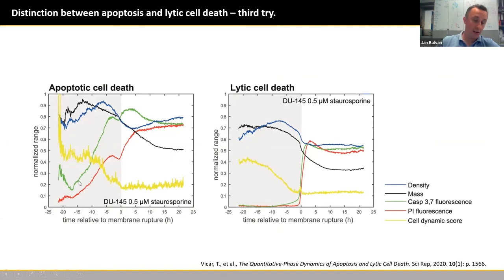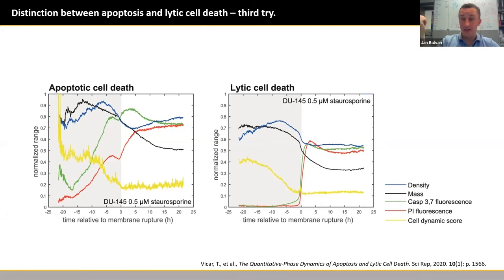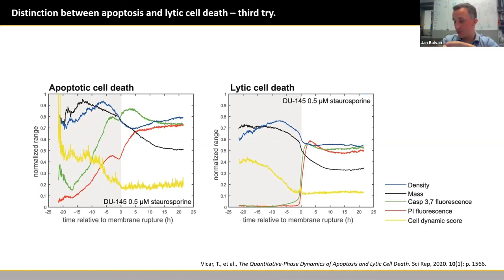You can compare how the curves differ for apoptotic and lytic cell death. Note the delay between the onset of the green fluorescent signal and the red fluorescent signal, typical for apoptosis — the cell first becomes positive for the green signal describing caspase activation, and subsequently for the red signal. You can also see that the cell dynamic score is really higher for apoptosis than for lytic cell death, and that the density is higher for apoptotic cells — not surprising, because when apoptotic cells lose contact with the extracellular matrix, they become round-shaped and the mass per area increases.